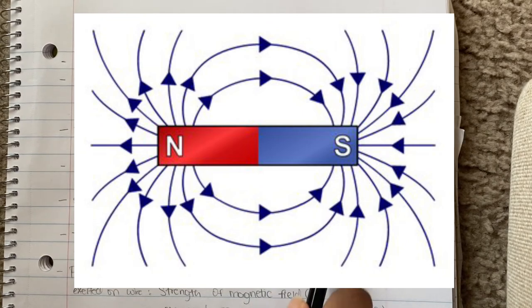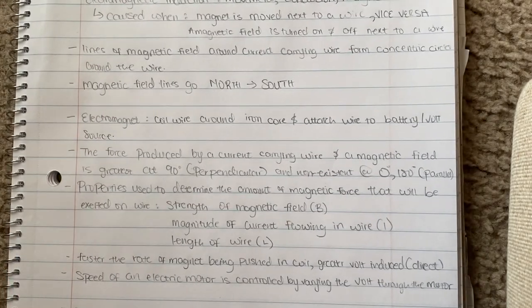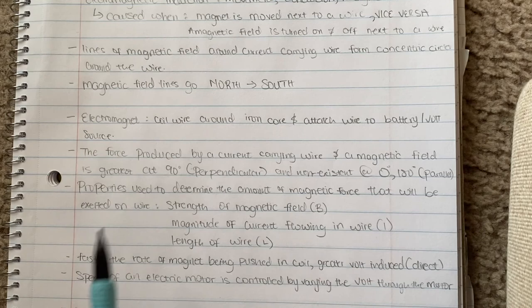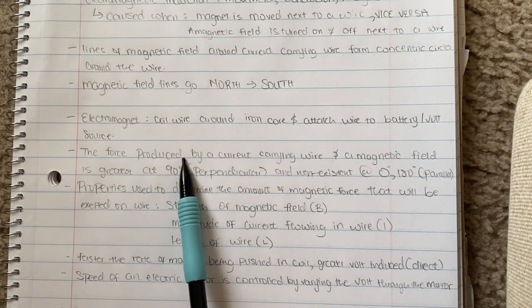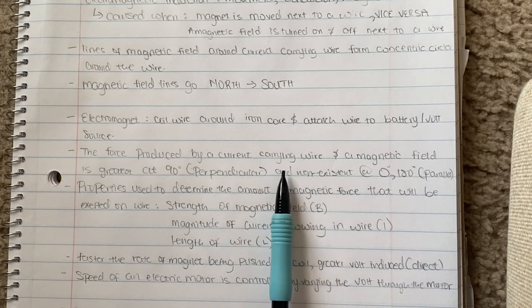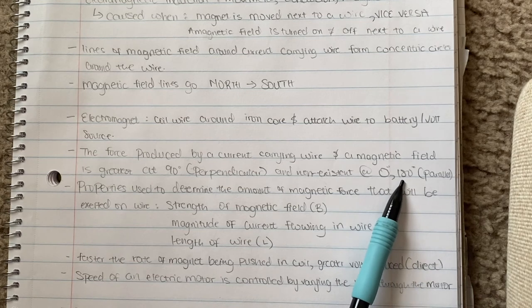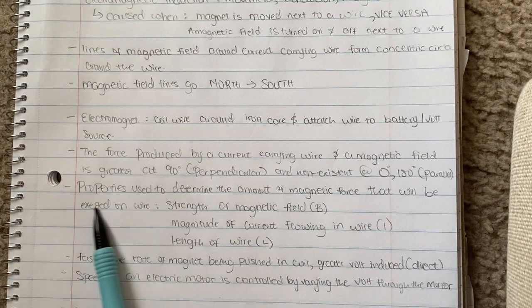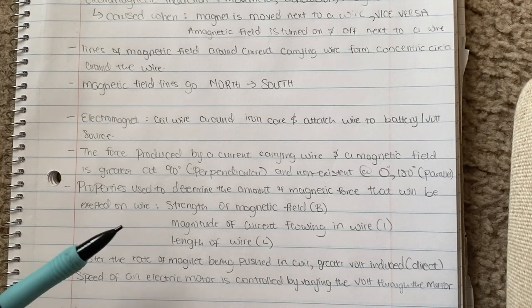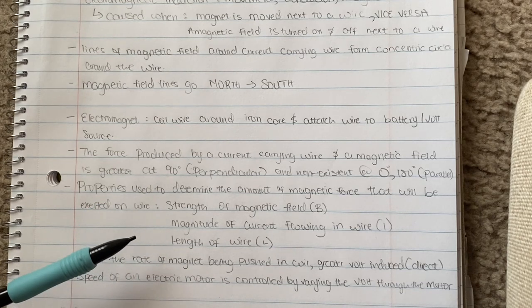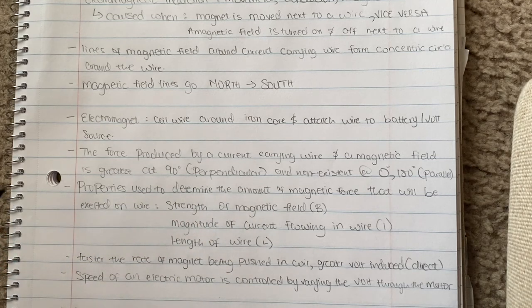Your magnetic field lines go from north to south. An electromagnet is made by coiling your wire around an iron core and you attach that wire to a battery or voltage source. The force produced by a current carrying wire and a magnetic field is greater at 90 degrees, so when it is perpendicular, and it does not exist when it's parallel, so at zero degrees and 180. Properties used to determine the amount of magnetic force that will be exerted on a wire include the strength of your magnetic field, the magnitude of current flowing in the wire, and the length of the wire.